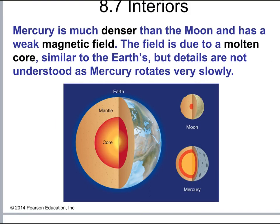Before discussing Moon formation, we can briefly look at Mercury's structure. Mercury is considerably denser than the Moon — similar to the Earth — and it does have a weak magnetic field generated by a molten core similar to Earth's. However, Mercury rotates on its axis very slowly, and the details of how its magnetic field is generated are not fully understood.